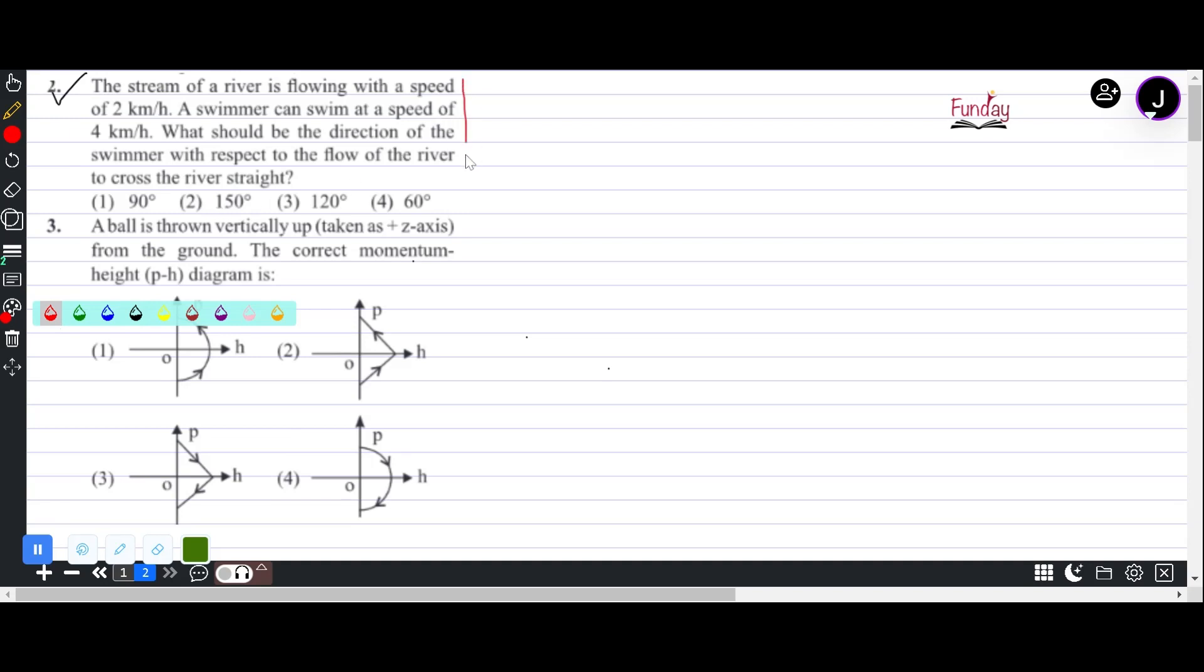Now the question here is: the stream of a river is flowing with a speed of 2 km per hour, and a swimmer can swim at a speed of 4 km per hour. What should be the direction with respect to flow so that we will cross the river straight?